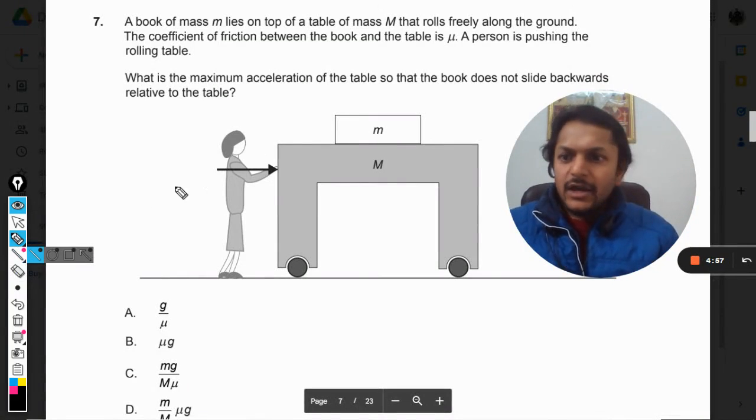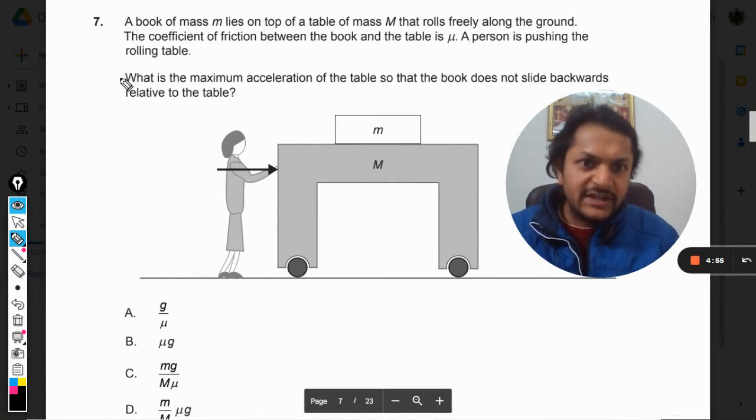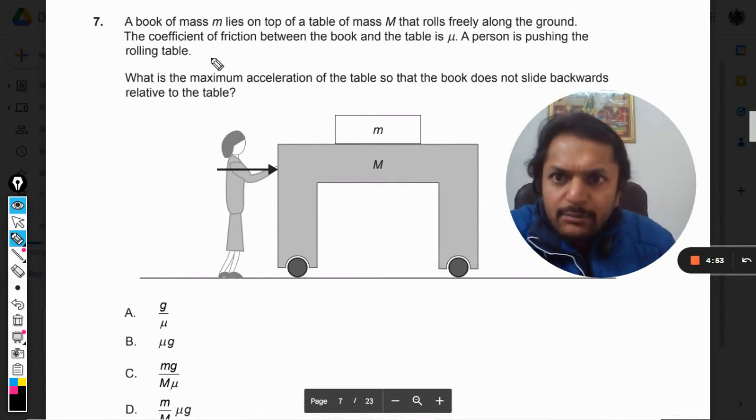A book of mass m lies on top of a table of mass M that rolls freely along the ground. The coefficient of friction between the book and the table is μ, so these two surfaces are experiencing friction.